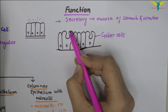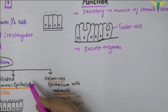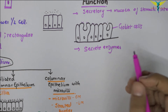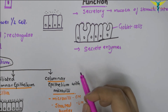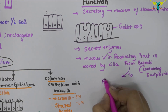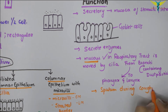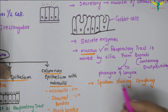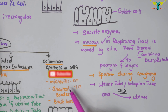Goblet cells are formed due to the excessive secretion and accumulation of mucus in the apical part. Some columnar cells secrete enzymes. In the respiratory tract, the ciliated columnar epithelium has cilia that help move mucus containing trapped dust particles from the bronchi towards the larynx and pharynx, where excessive mucus is expelled as sputum during coughing. In the uterine tube, the movement of cilia helps in the passage of the ovum towards the uterus. The microvilli increase the surface area for absorption.